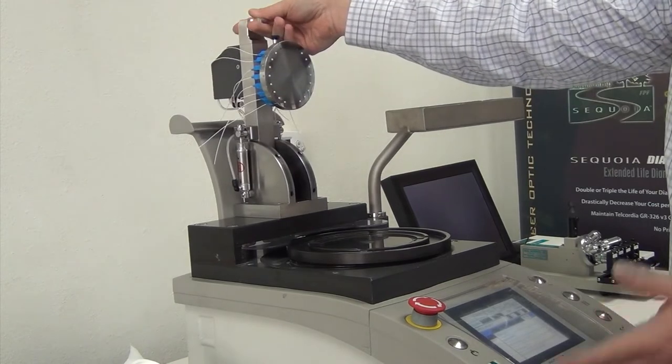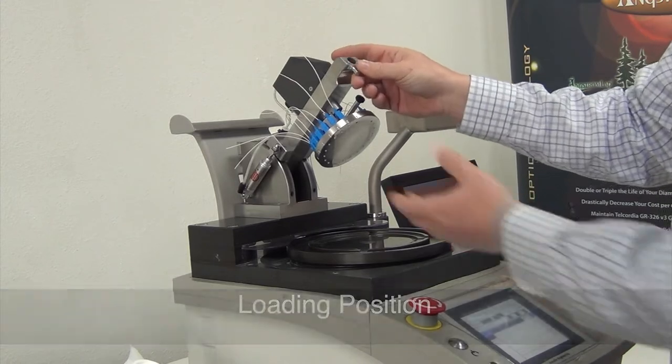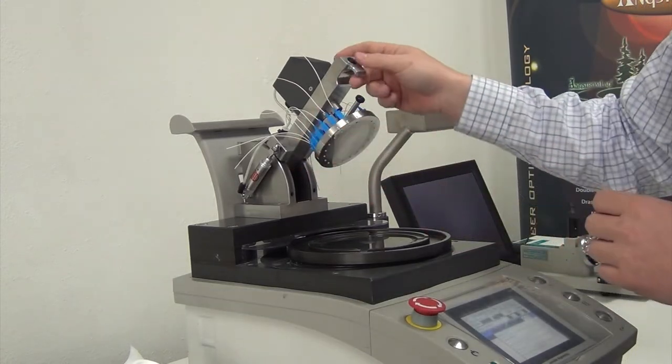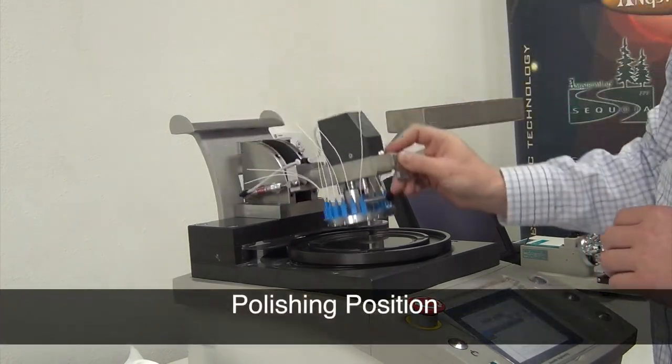You can see this model has a couple of different loading mechanisms. The 45-degree angle is used to load the connectors into position, a cleaning position, and finally the polishing position.